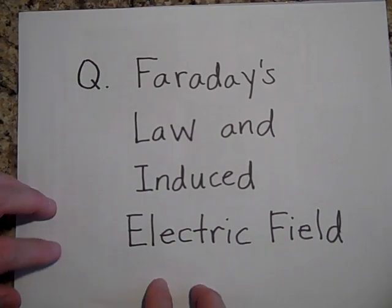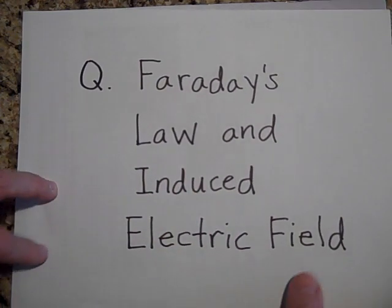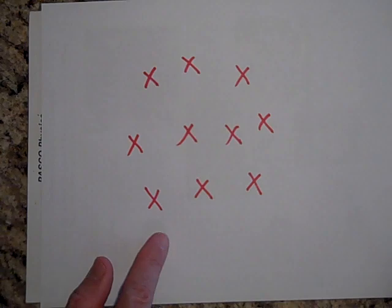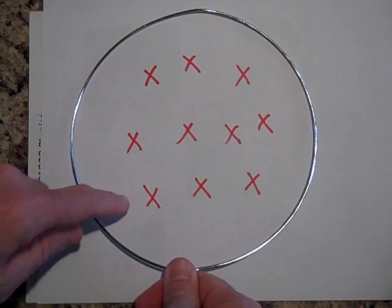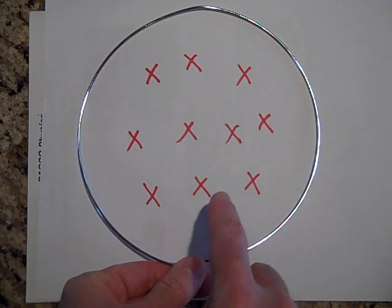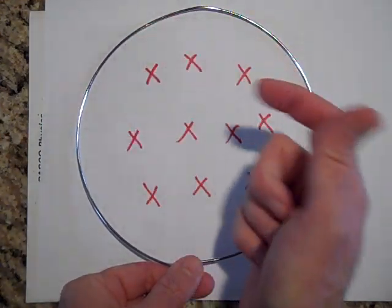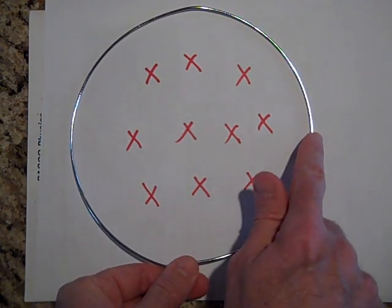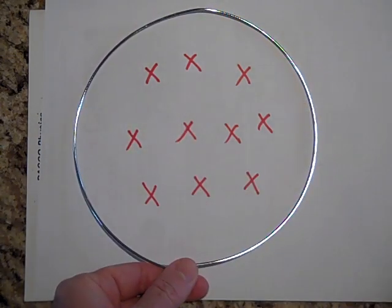I'd like to tell you about the other part of Faraday's law — how it induces electric fields. If we have a magnetic field that's changing with time and we put a hoop in here, let's say the X's are increasing with time. What happens is this hoop is going to try and stop those X's from increasing by making dots, and to make dots it's going to induce a current this way around it. Not only will a current be induced, but there's an electric field that's producing that current.